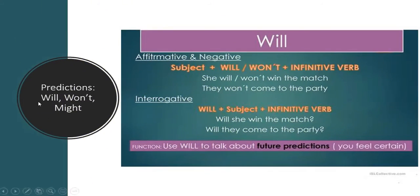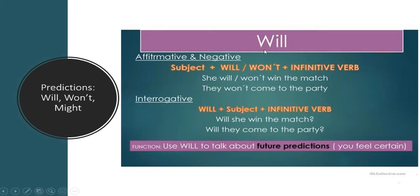We're going to see will, won't — which is the negative form of will — and we are going to see might. This topic is actually very easy. We use will, won't, and might for future predictions.